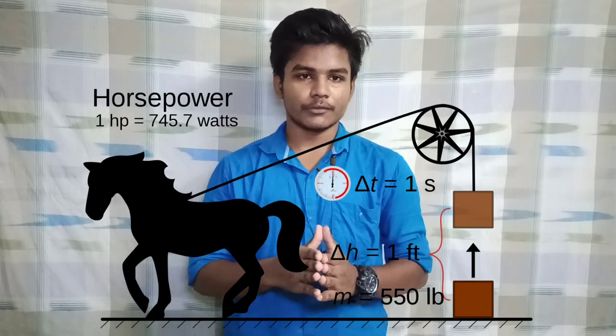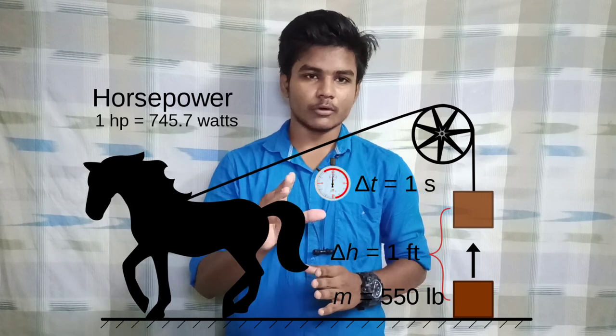Now let's look at the bike's power output: 25 BHP. BHP stands for brake horsepower. How do you measure it? The engine generates power, but some is lost to friction, heat, and vibration. The remaining output is the brake horsepower.